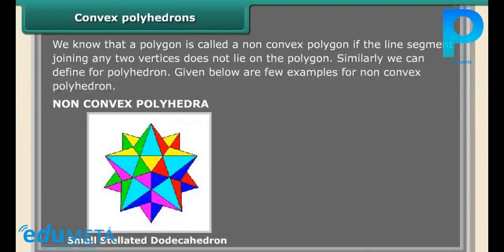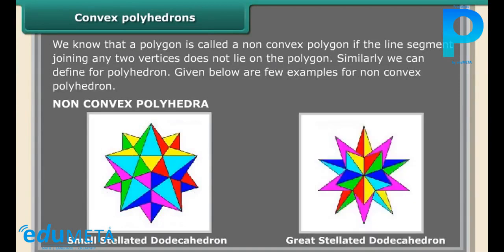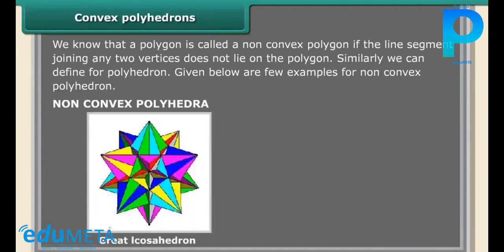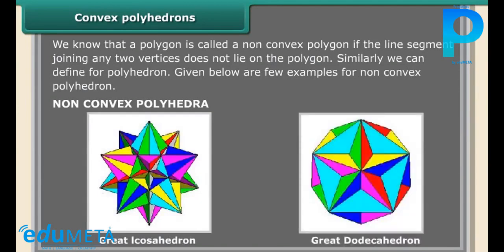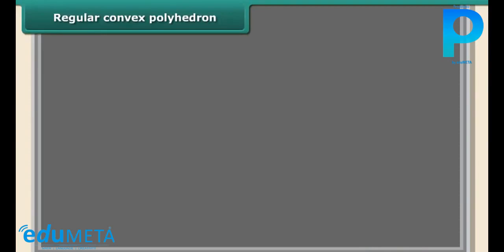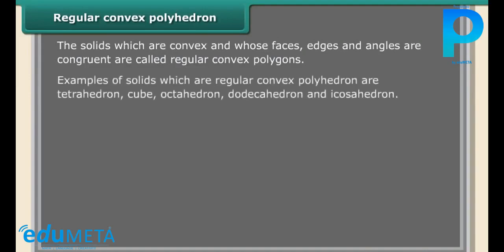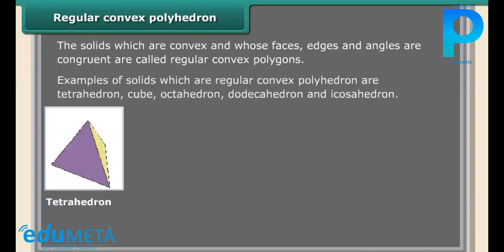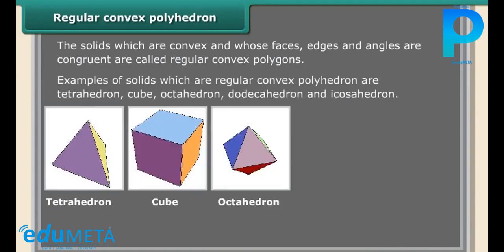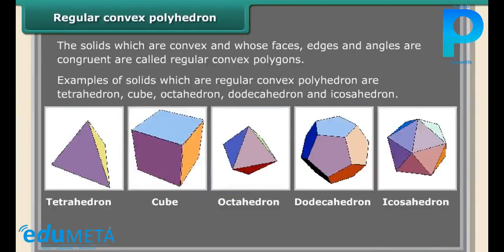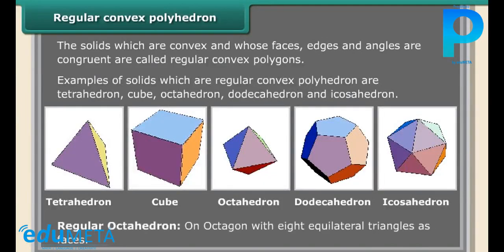A small stellated dodecahedron, great stellated dodecahedron, great icosahedron, great dodecahedron. Regular convex polyhedron: the solids which are convex and whose faces, edges, and angles are congruent are called regular convex polyhedrons. Examples of solids which are regular convex polyhedrons are tetrahedron, cube, octahedron, dodecahedron, and icosahedron. Regular octahedron: an octahedron with eight equilateral triangles as faces.